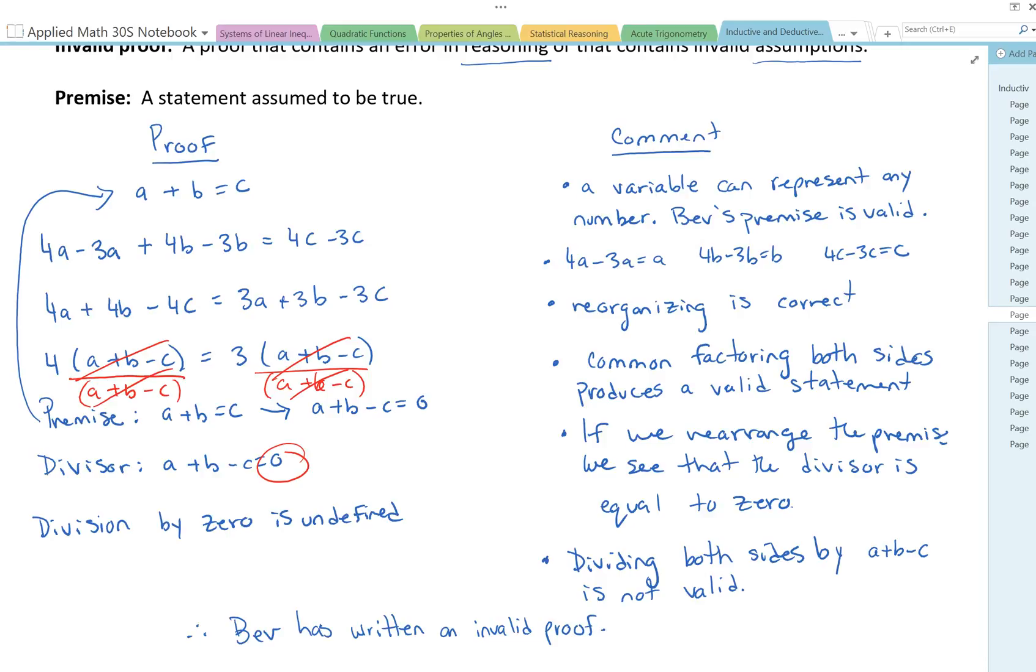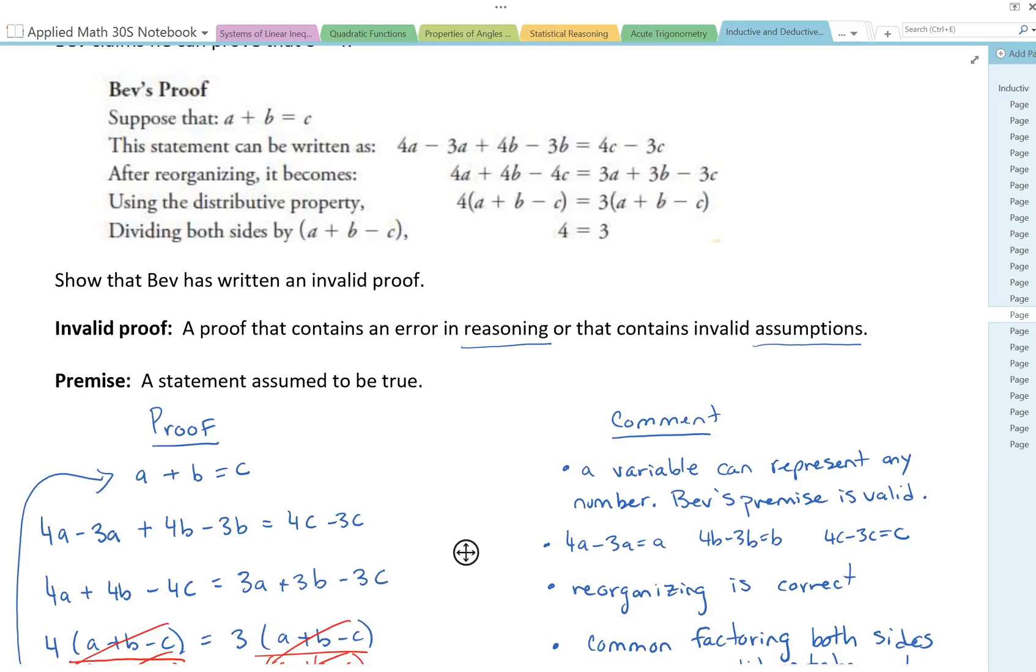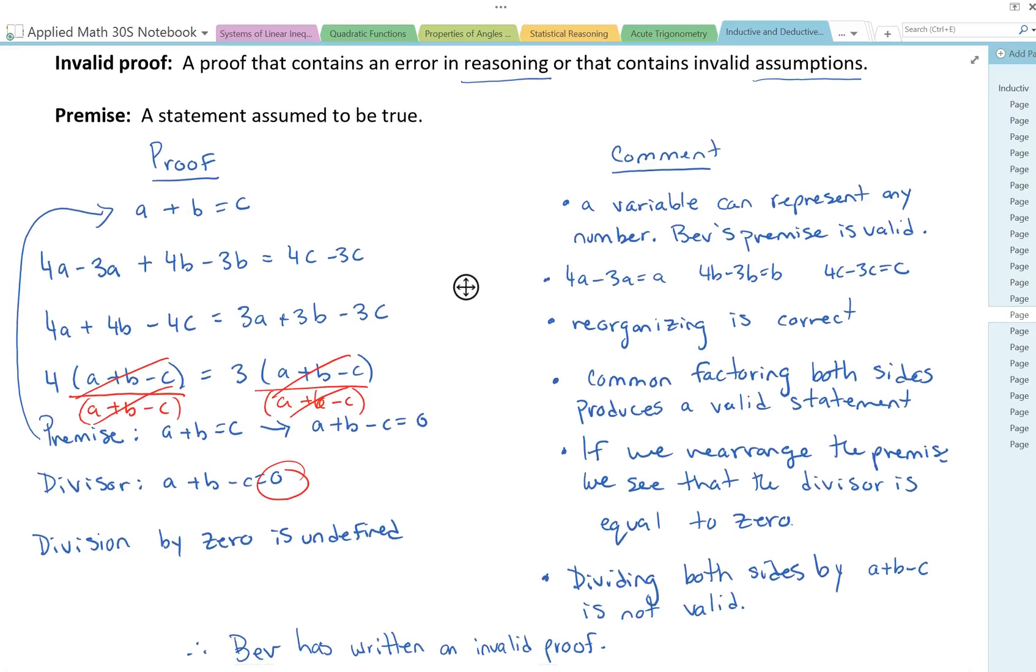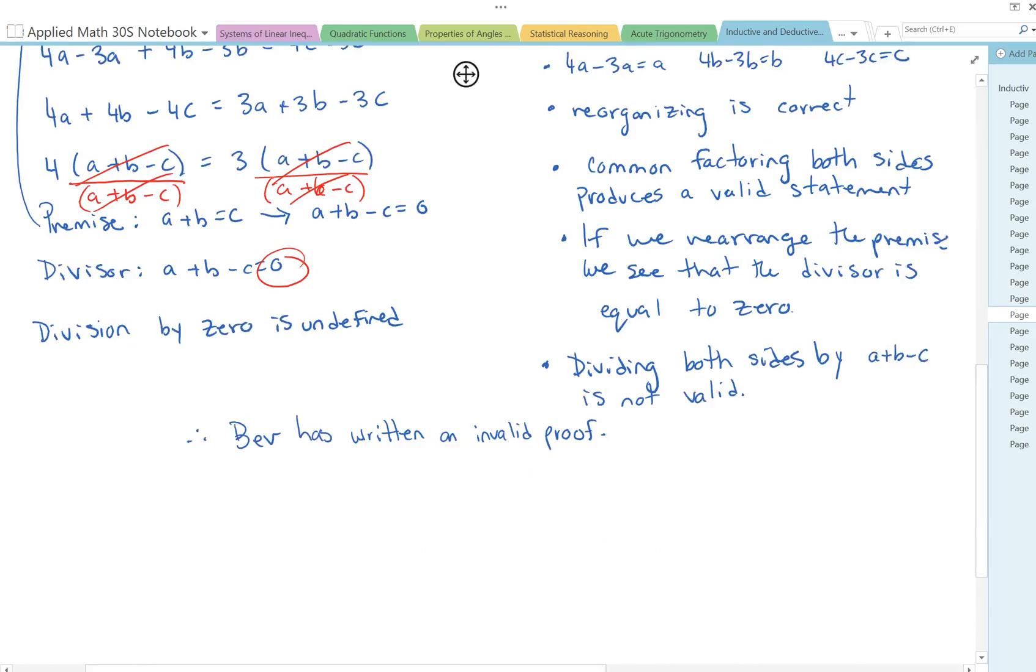Go back and have a look again. We've got this proof and at first glance, up until the very end, everything looks really good. But when we go back and look at the premise and divide both sides out, we can see when we rearrange it that that premise, when rearranged, is equal to 0. If you divide by 0, that's an invalid statement because your answer is going to be undefined. The proof can't be based on an invalid premise.